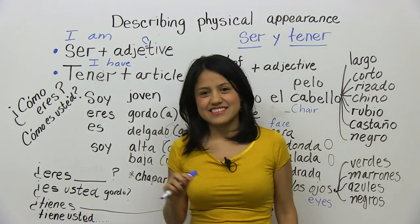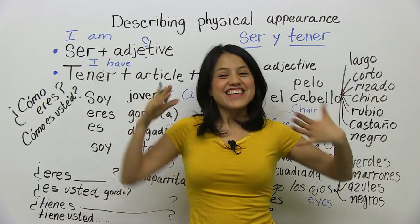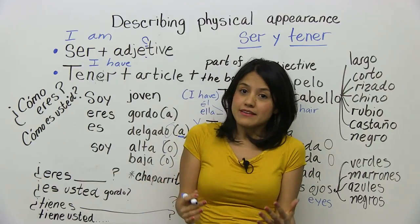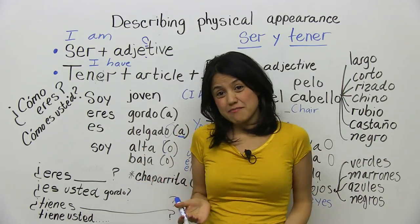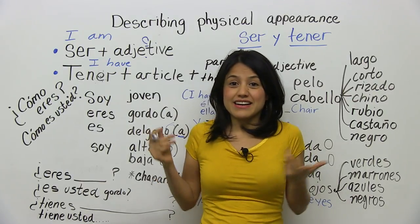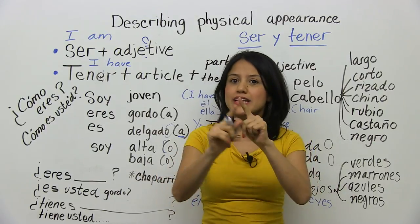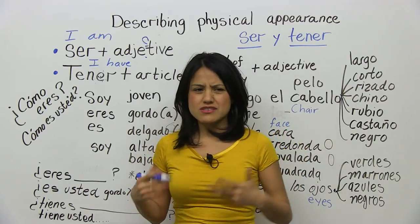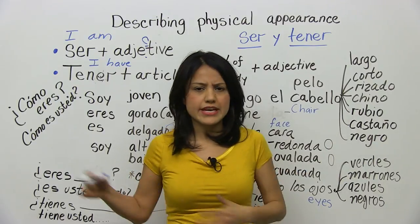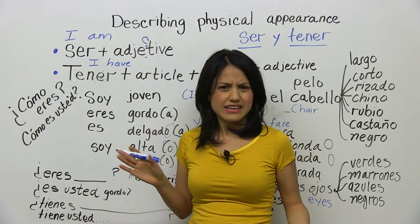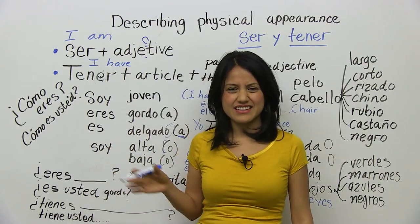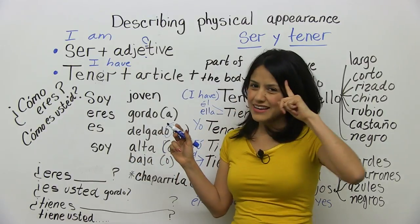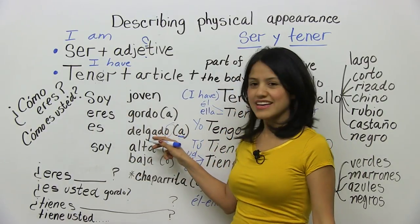Delgado, delgada — the equivalent in English? Thin, slender. Unlike fat — some people are fat, some people are thin. I am thin, I've always been thin. My mother wanted me to gain weight but I couldn't. In Spanish it's normal to say él es gordo, ella es gorda — the way they are, there's nothing strange about it. In English I think it's more of a cultural thing. Anyway, delgado is thin.